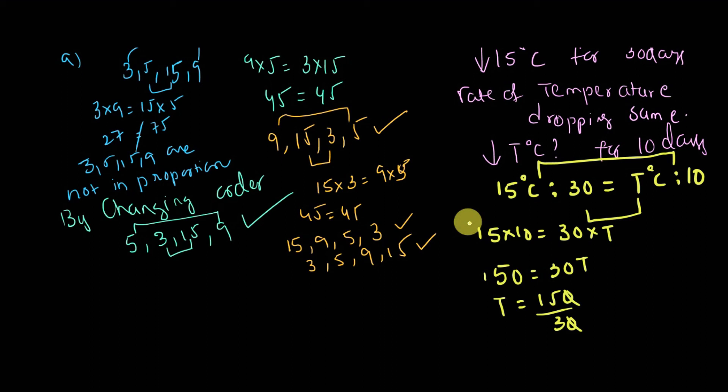Then T will be equal to 150 by 30. 0, 0 cancel, 3, 1... 3, 5. Then temperature will be 5 degrees Celsius. The decreasing temperature will be 5 degrees Celsius.